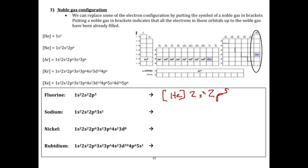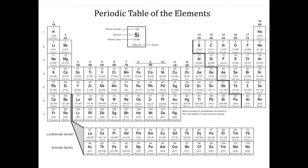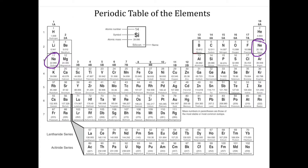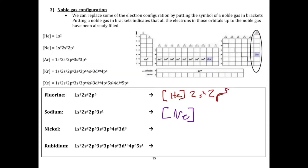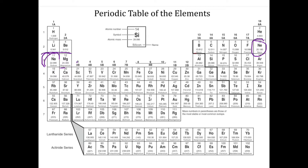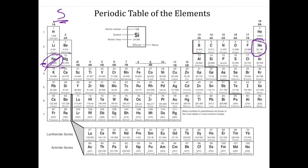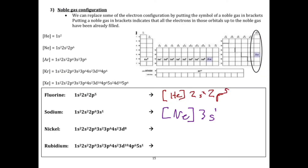Let's go ahead and do sodium now. Here's sodium. What you do is you go to the noble gas in the row before — it's neon. You write that in brackets. Then you write the electron configuration for the row that the element is in. Sodium is at the very beginning of the row, so this is the S block — these are the 3S's. Sodium is one element into the S block, so it's 3S1.